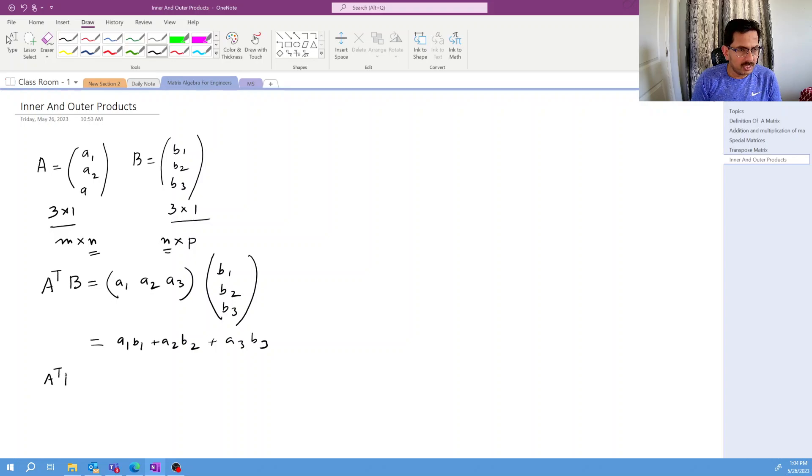Now let's point to the sum of the properties. So A transpose B, if this result is coming zero, which implies that A and B both are orthogonal.